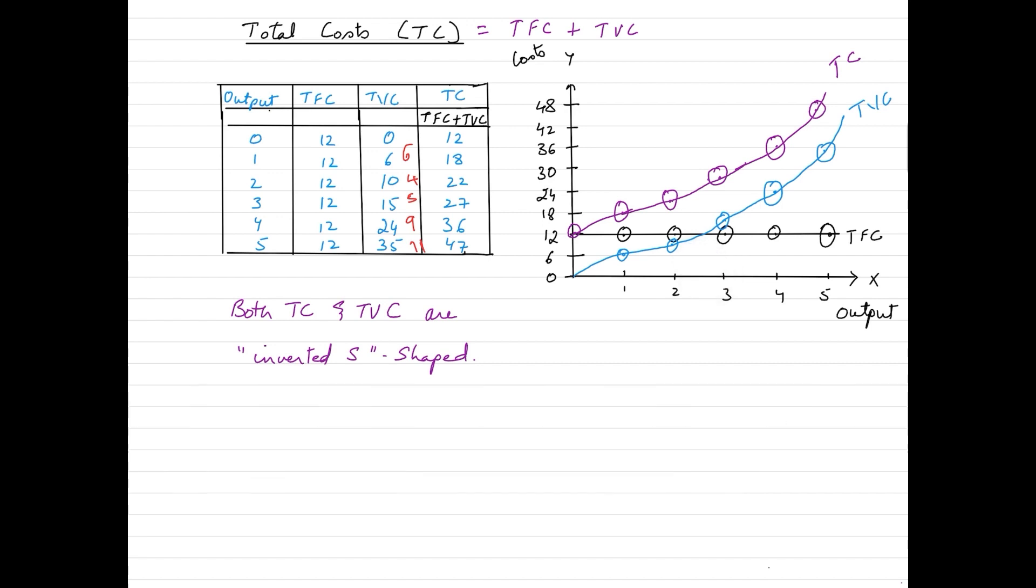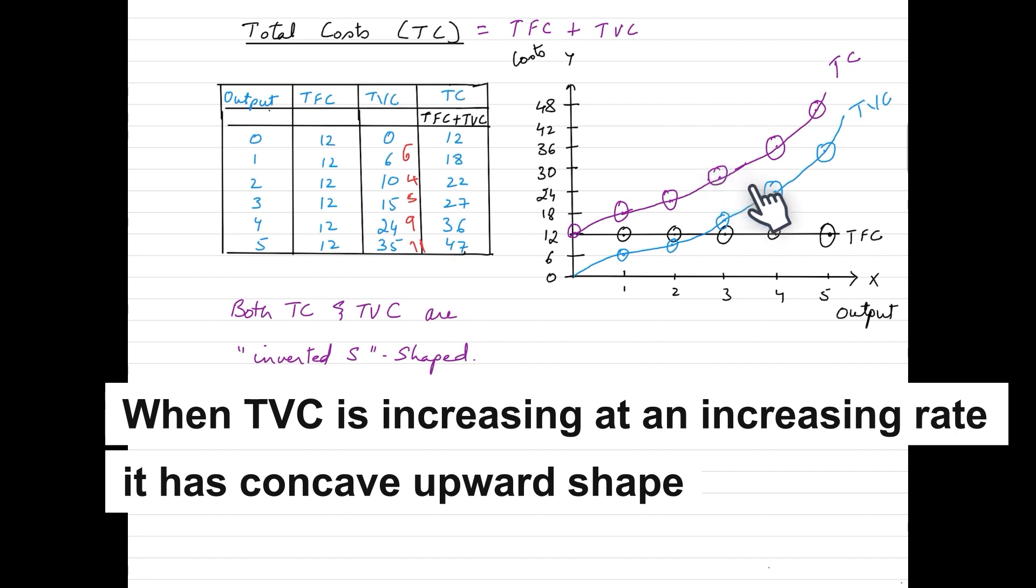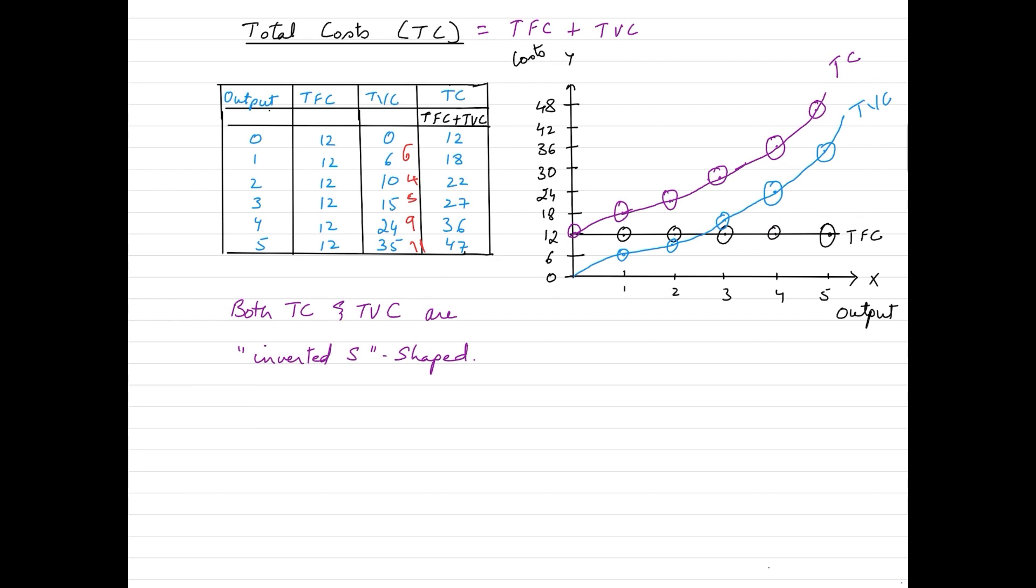Likewise, the moment from this unit, which is the third unit, you see it is increasing in an increasing trend. And because of which we get a shape like this, which is concave upwards. So when we combine this, we get an inverted S shaped curve.